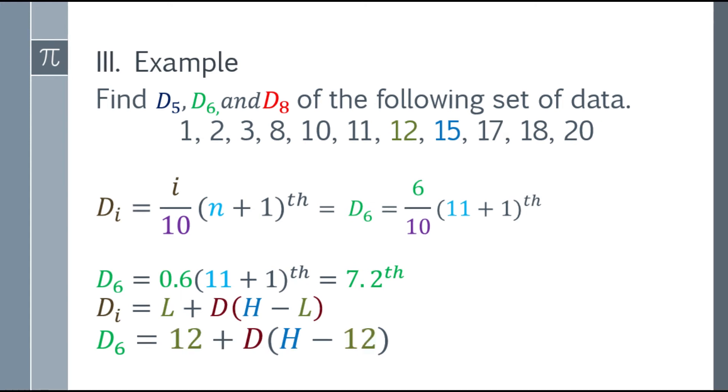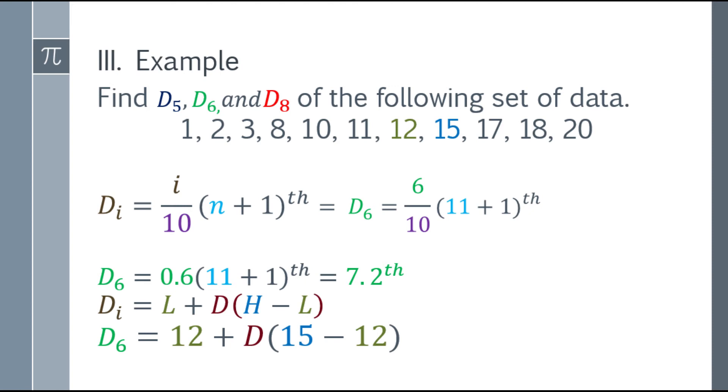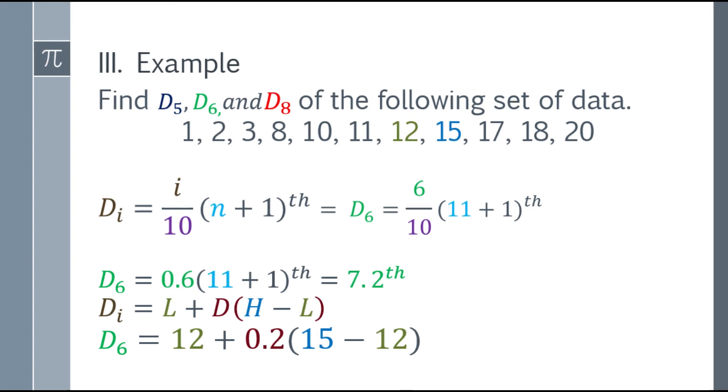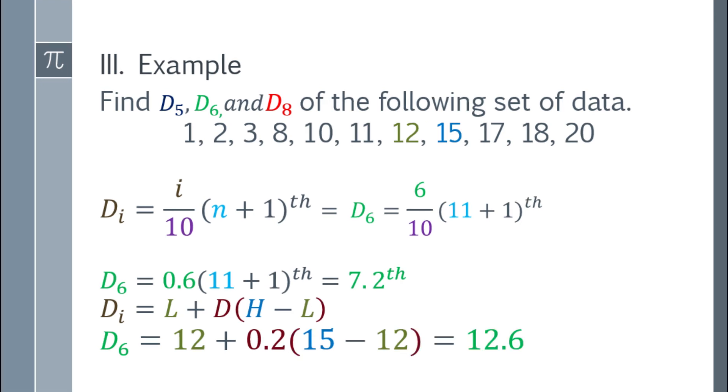So, the lower number will be 12. And the higher number is 15. And the decimal here will be 0.2, because 7.2. Just take the decimal, 0.2. Now, we have to simplify it. So, 15 minus 12 is 3. Times 0.2, that will be 0.6. Plus 12, that will be 12.6. And the final answer for the 6th decile is 12.6.